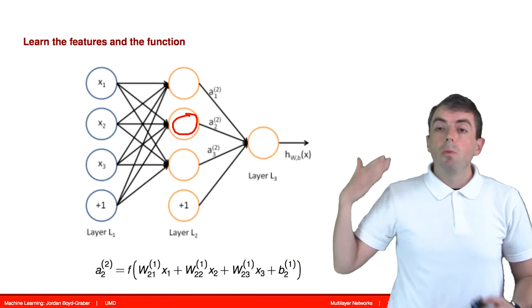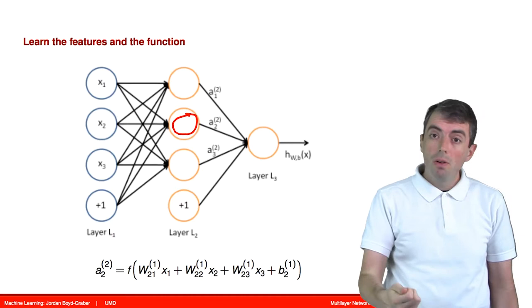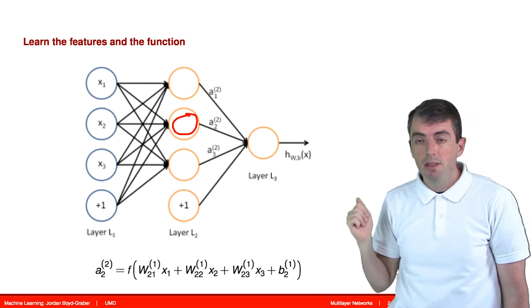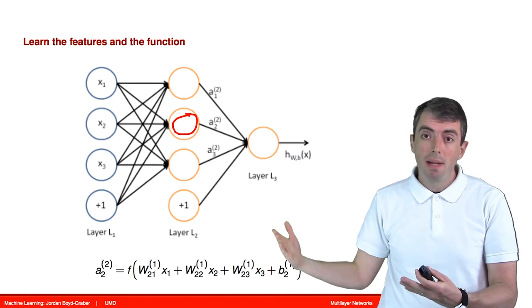We do exactly the same thing for the next hidden node down. You have its own parameter vector w2 that gets multiplied by all of the feature vectors, you add in a bias term, and then that gets passed through an activation function just like for the first hidden node.